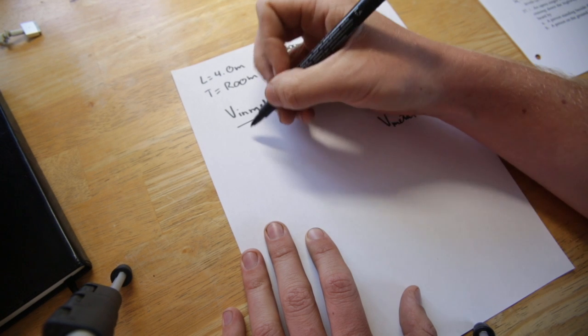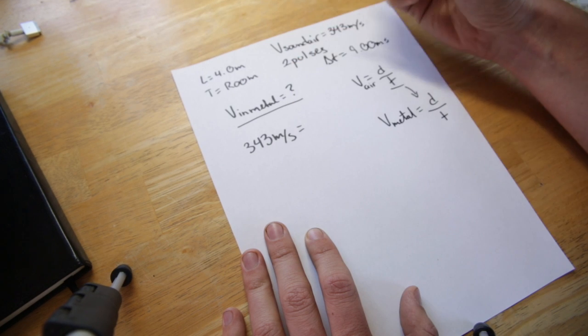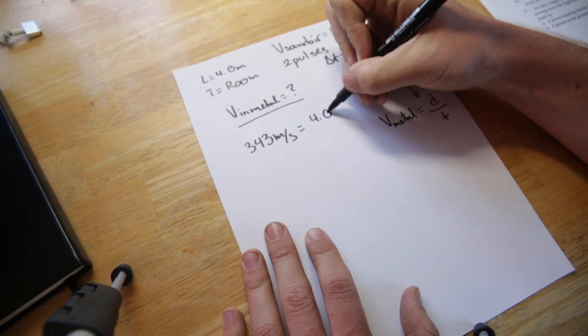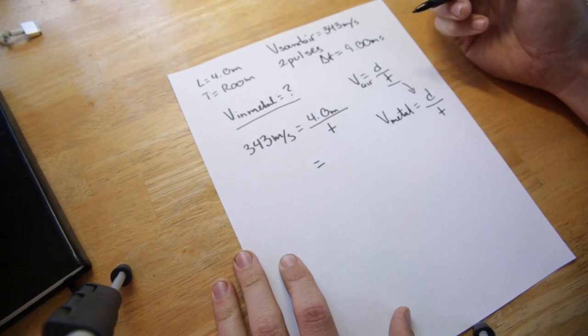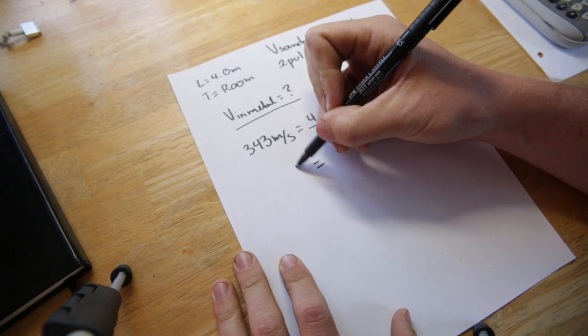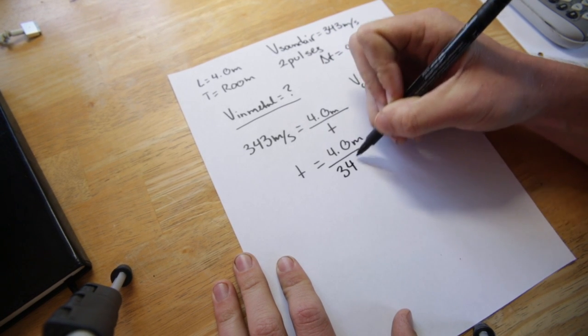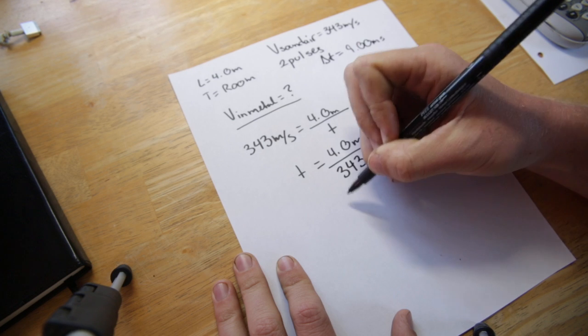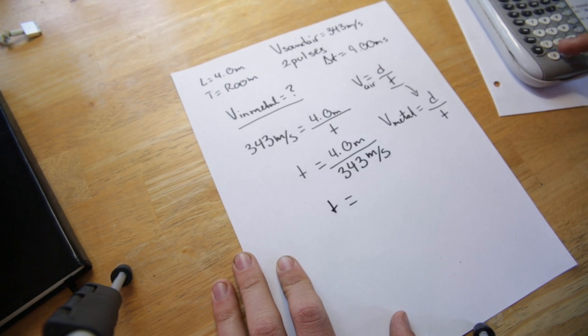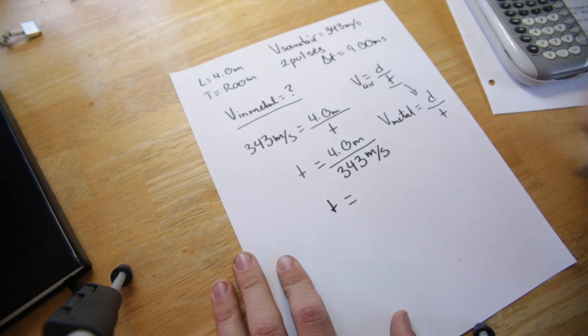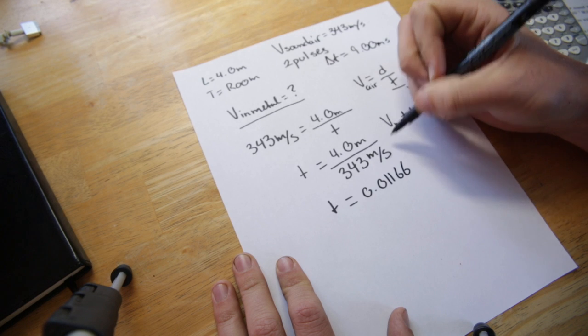So we have 343 meters per second is equal to 4.0 meters divided by time. And we can simplify this equation by switching these. So therefore we will get 0.01166 seconds.